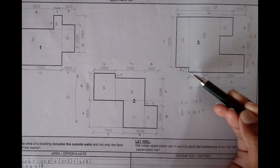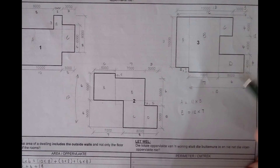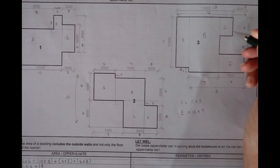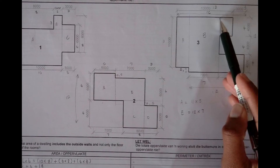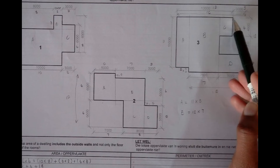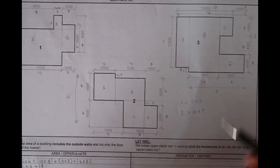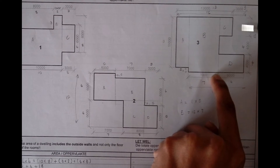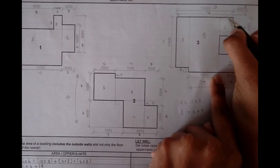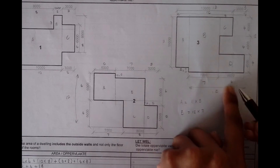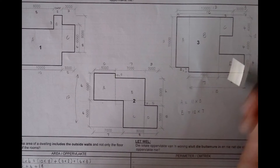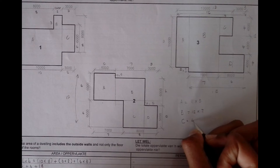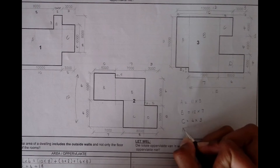Moving on to C: we can see that C already has the length of 4, but we need to know how long this little bit is. Looking at that 6 — from here to here is 6, and the distance already given is 3,000, making this piece also 3. So 3 plus 3 gives that 6, meaning C is 4 multiplied by 3.